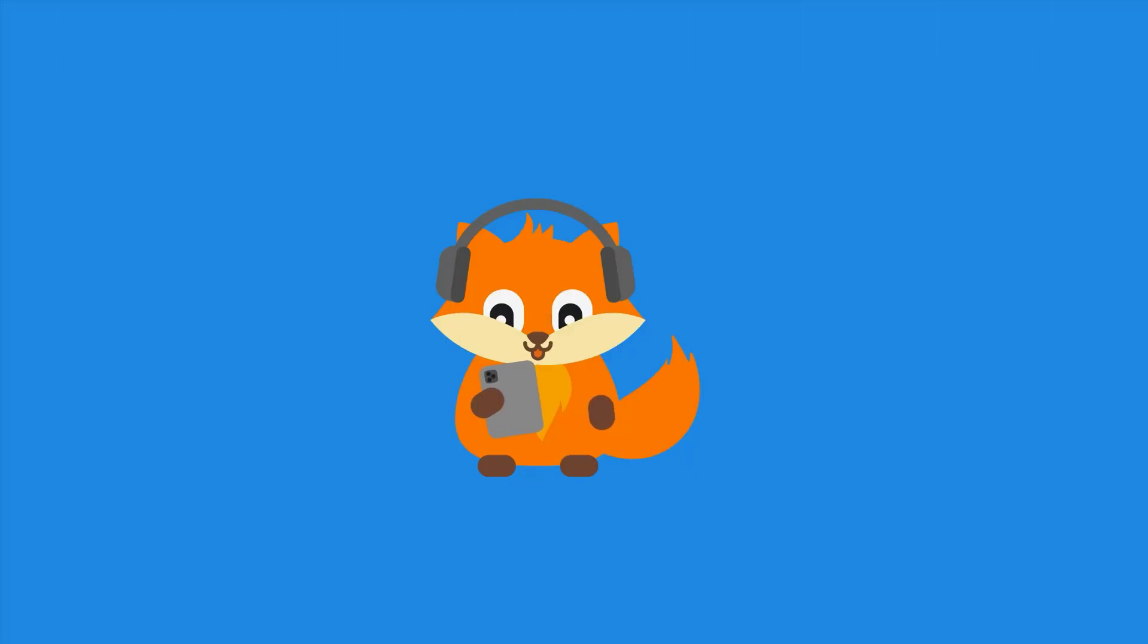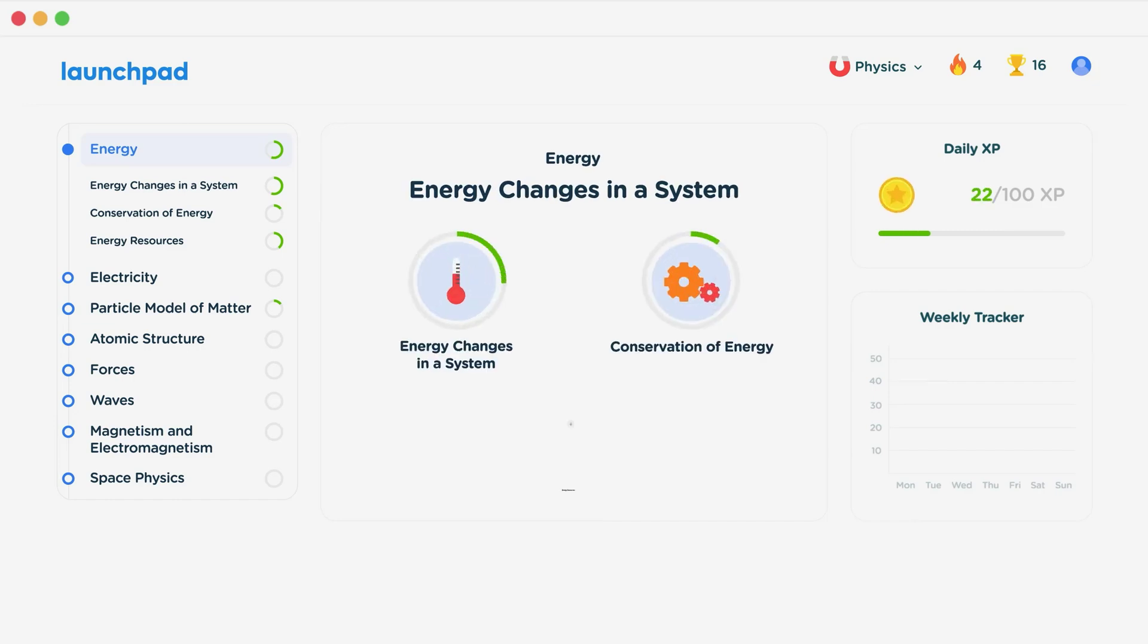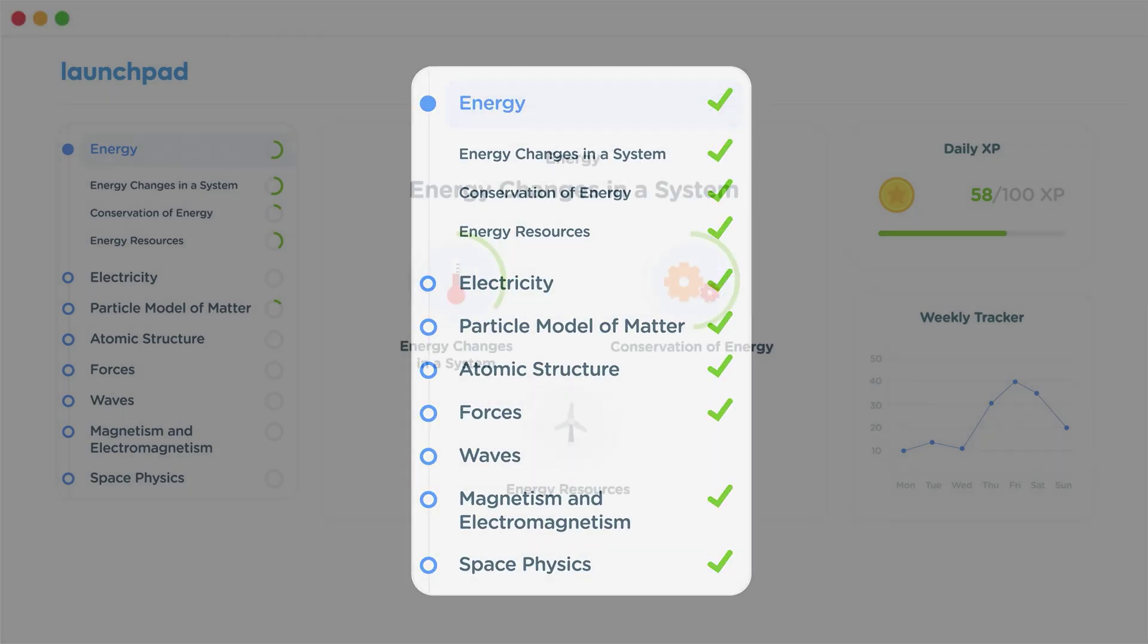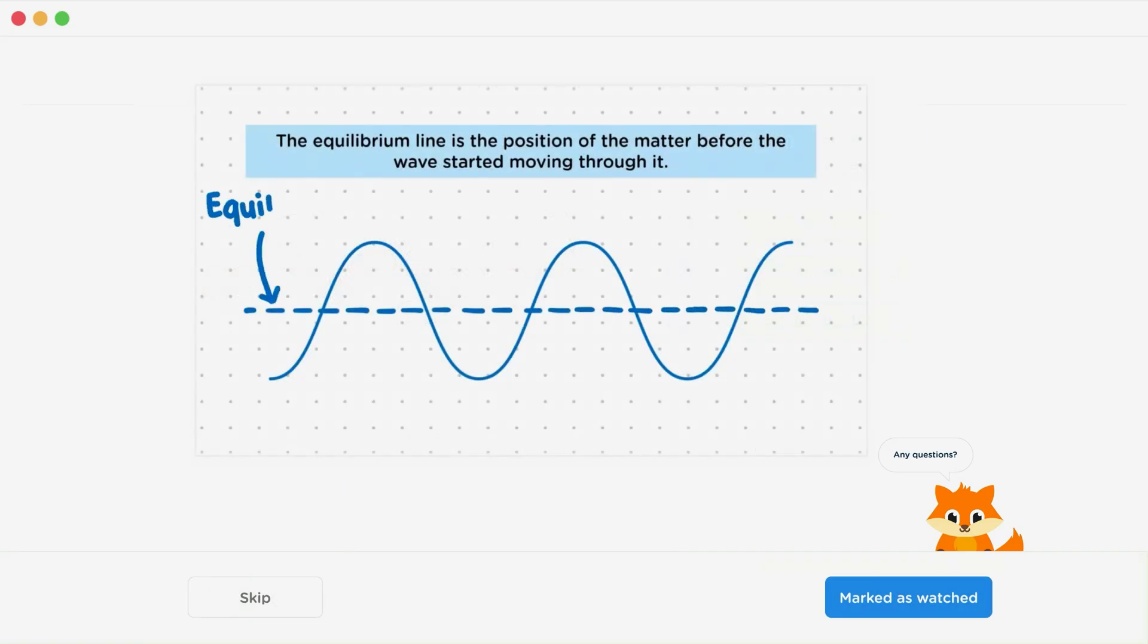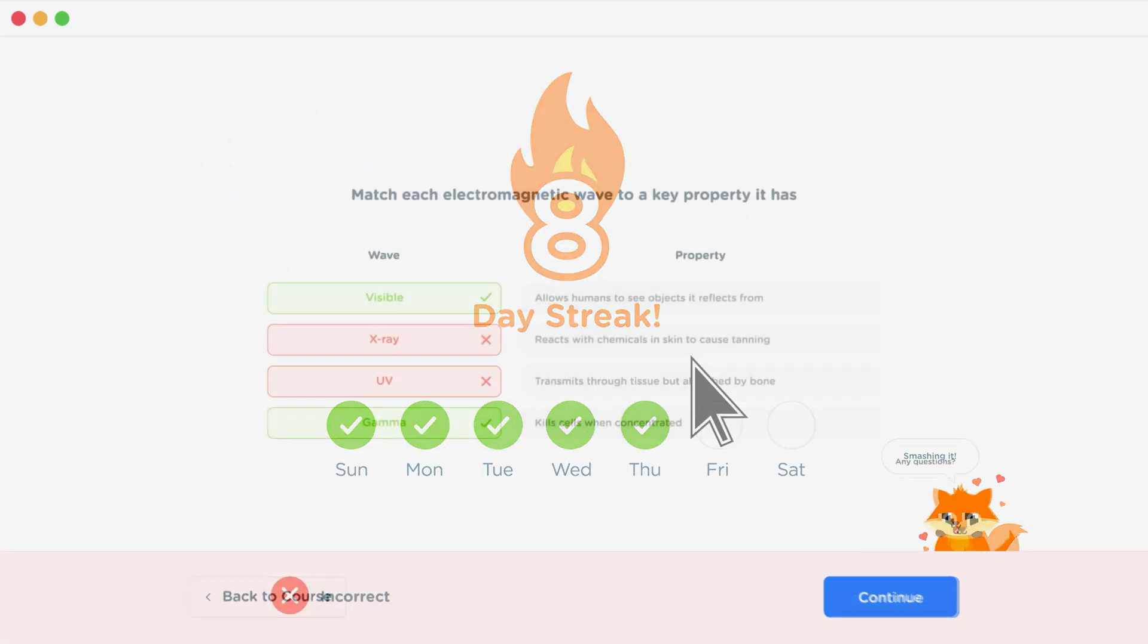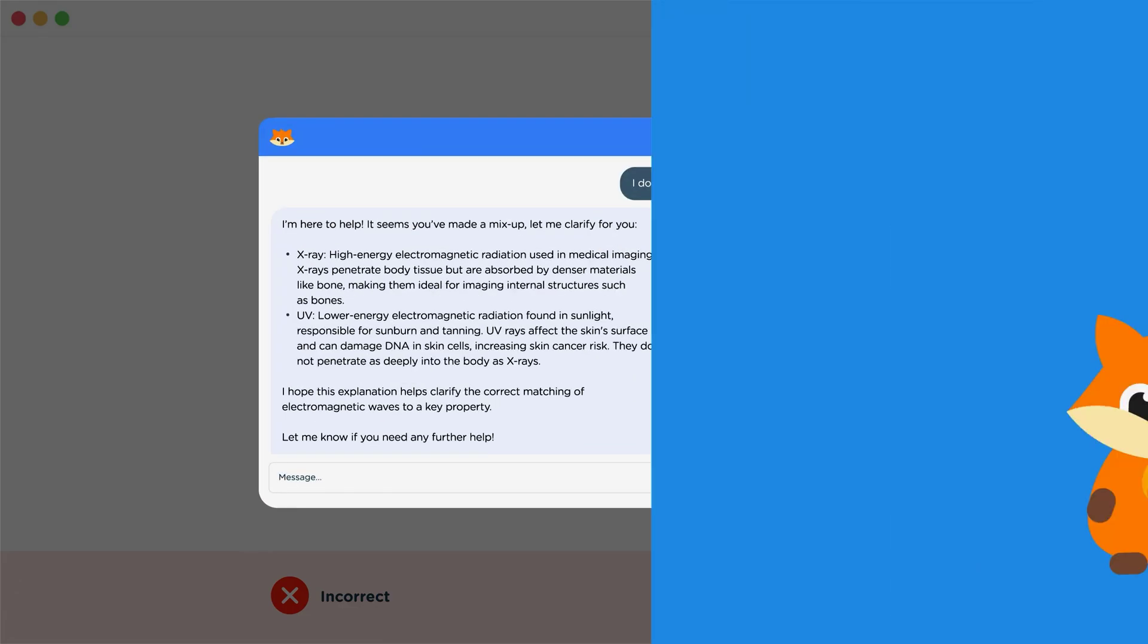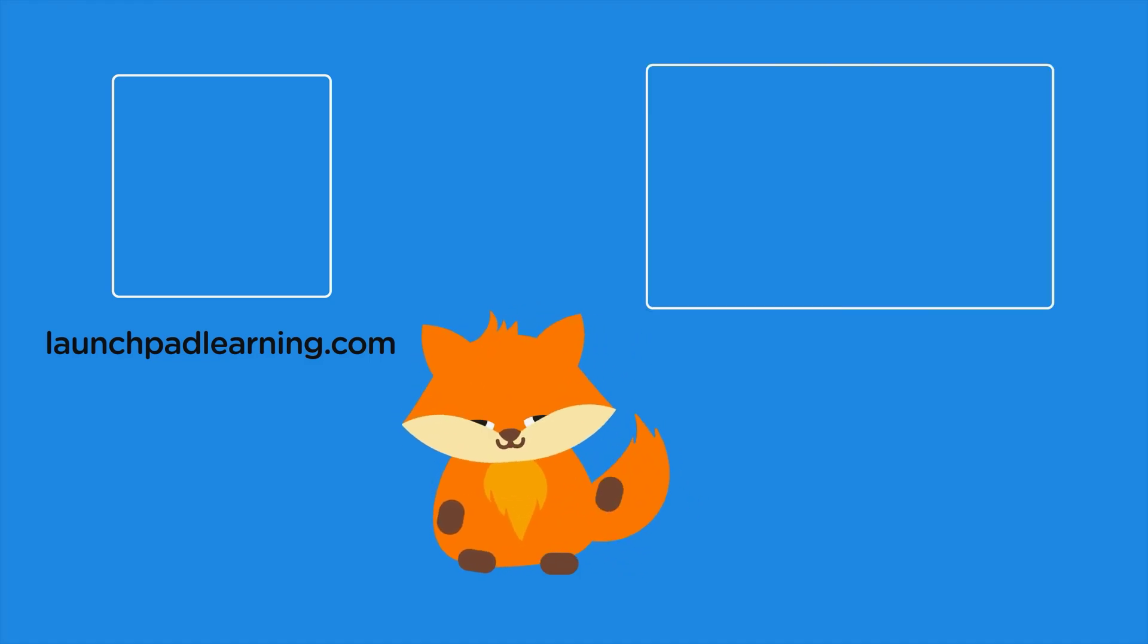Thanks for watching. If you want to take your GCSE revision to the next level, head over to launchpadlearning.com and check out our smart learning platform that's been designed to get you top results in your exams. We cover your whole specification and make revision fun, with interactive quizzes, easy to follow videos and more. You'll be kept motivated by your own AI tutor who's here to support you every step of the way. To check it out for yourself, click here. Or click here to keep watching a selection of the videos from our full GCSE Physics course. See you there!